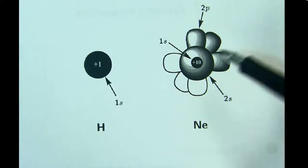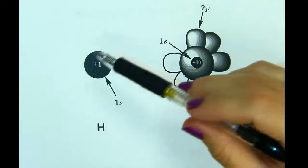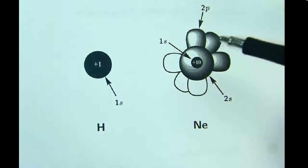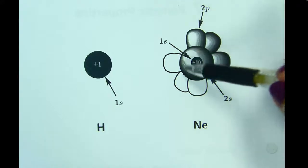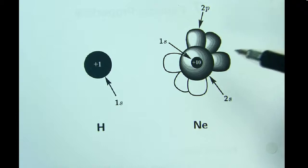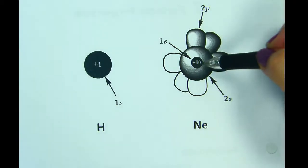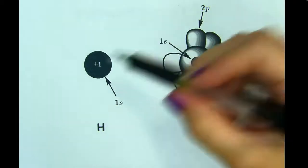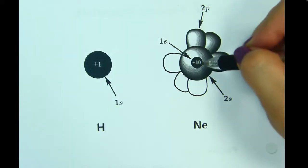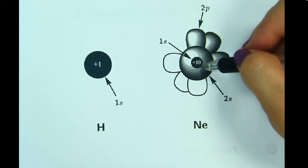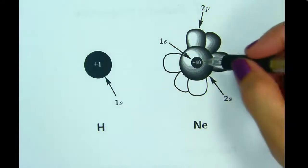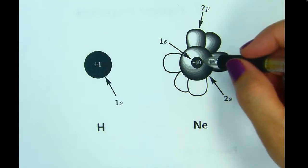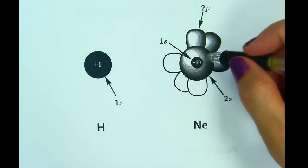Now let's talk about electron shells, comparing hydrogen's 1s shell, denoted in black, and neon's 1s shell, also in black, the 2s in gray, and the 2p orbits. The 1s shell in neon is closer to the nucleus than in hydrogen because neon has a larger positive charge in its nucleus, or a higher effective nuclear charge — plus 10 versus plus 1. So it pulls the 1s orbital closer to the nucleus because of the positive and negative attractions between the nucleus and the electrons.